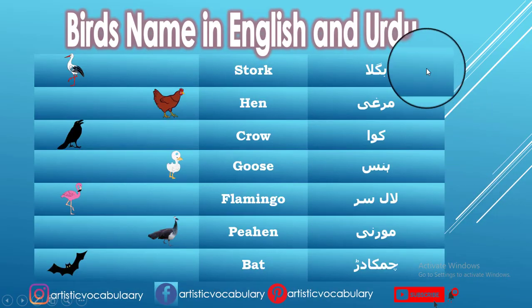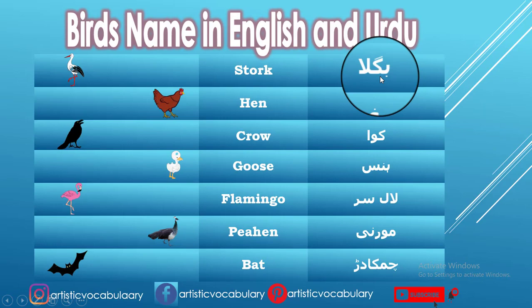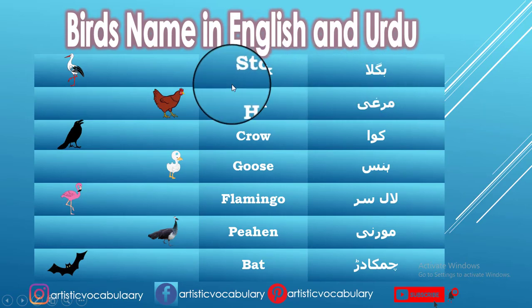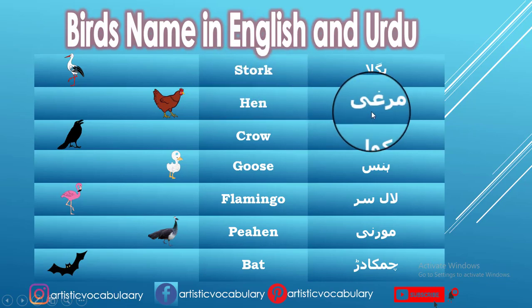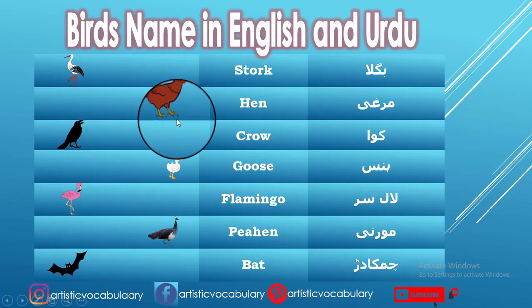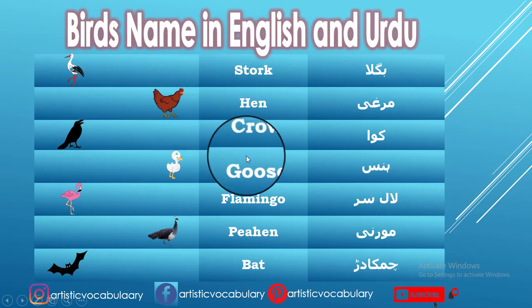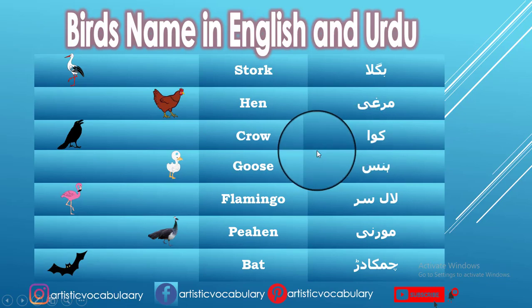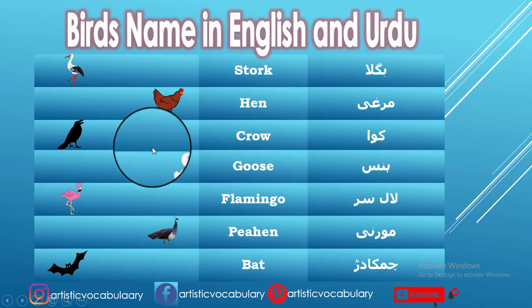Bagla — in English we call it Stork, with the R silent: Stork. Murghi — Hen. Kavwa — Crow.